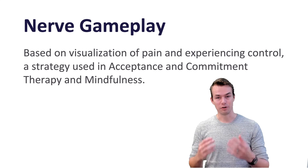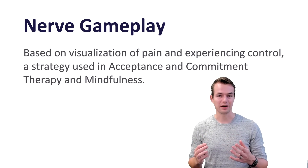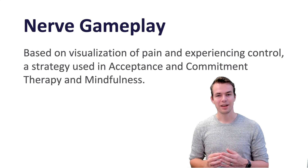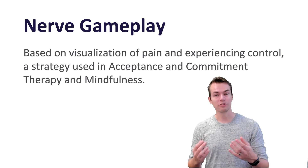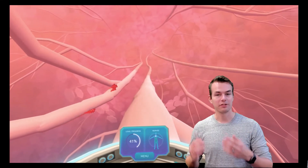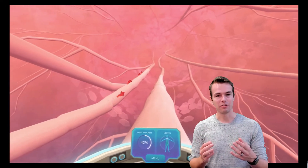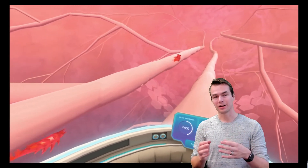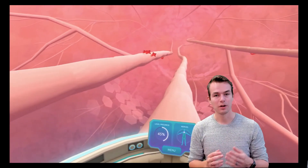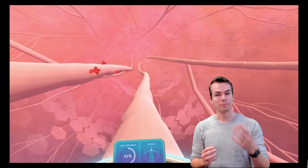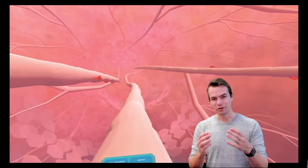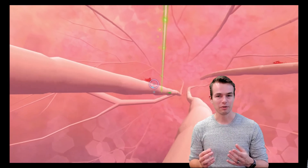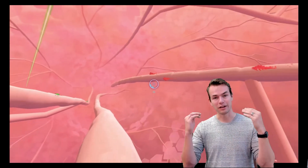The first type of gameplay is the nerve gameplay. It's based on visualization techniques that are often used, for example, in acceptance and commitment therapy and in mindfulness — a really strong tool for people to experience control themselves. You can see the nerve-based gameplay here. In visualization exercises, people actively gain control over their problem. We translated this to the app in VR and on the smartphone to let people actually shoot their own pain, and by doing so they are convincing the emotional part of their brain that there is no danger. This can actually decrease the sense of pain people are feeling.